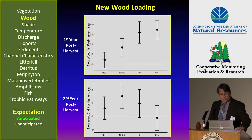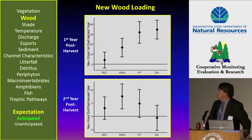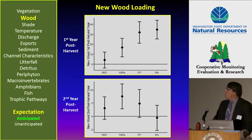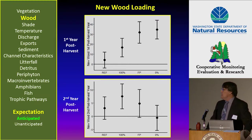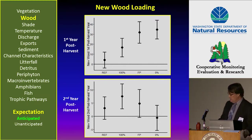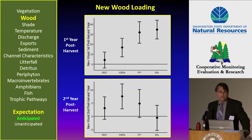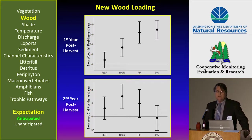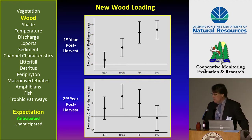Our second variable category is wood. Within wood we had some subvariables. This one is new wood loading, which represented the new wood that appeared in each year of post-harvest. The first year of post-harvest is in the top panel and the second year is below. You can see an increase in new wood in the first year of post-harvest with treatment intensity. Then in the second year post-harvest, because treatment intensity has less and less of a buffer depending on the treatment, you get the quadratic pattern. Both of these were expected.